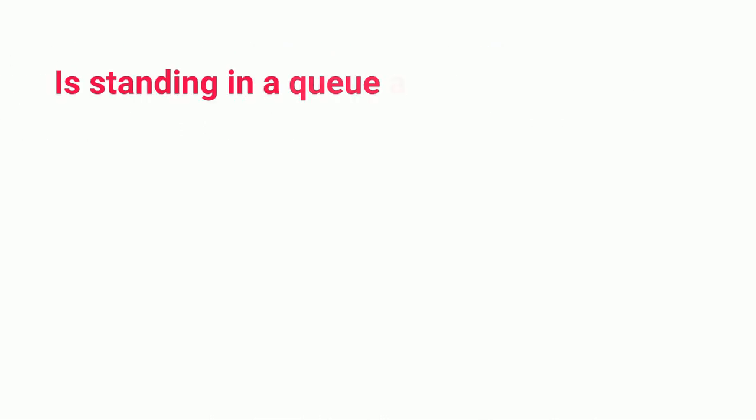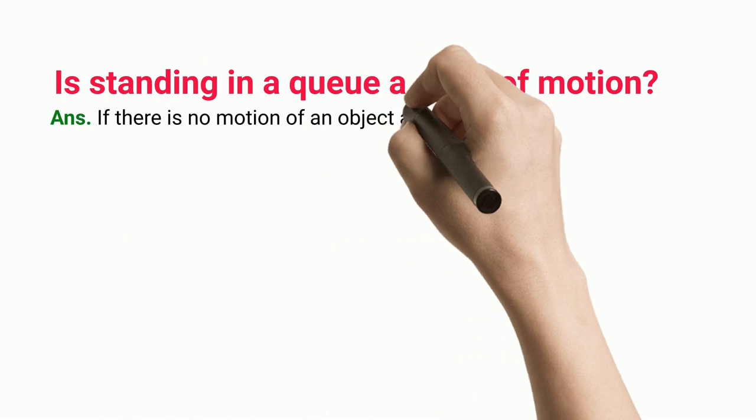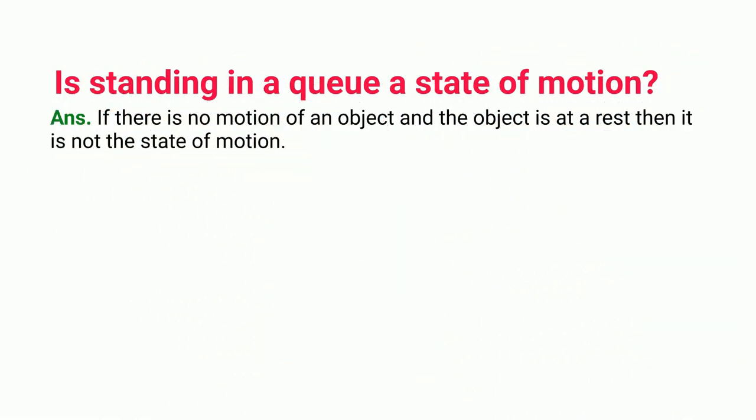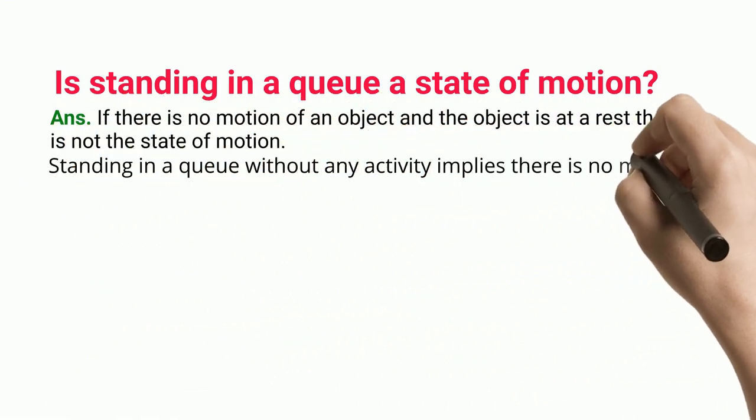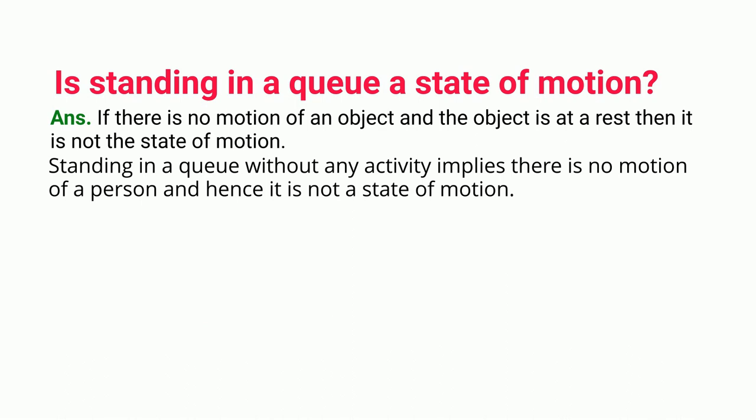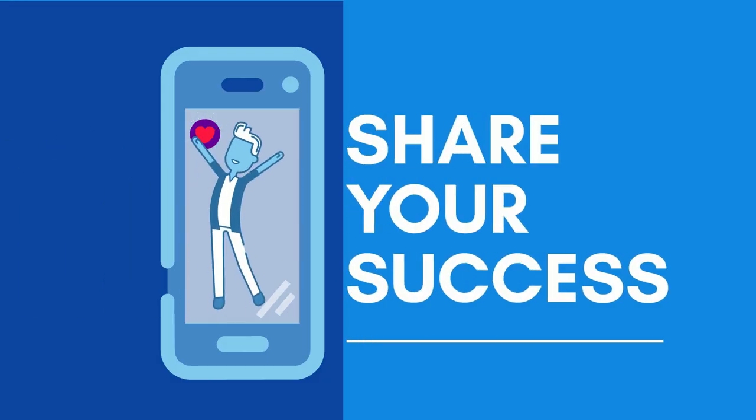Is standing in a queue a state of motion? If there is no motion of an object and the object is at rest, then it is not the state of motion. Standing in a queue without any activity implies there is no motion of a person, and hence it is not a state of motion.